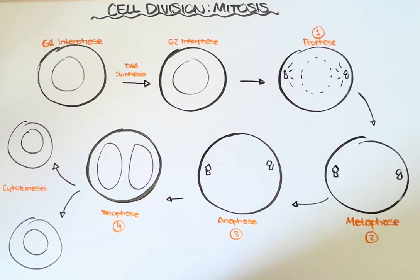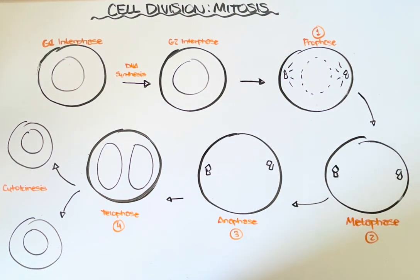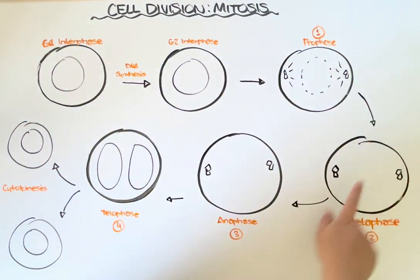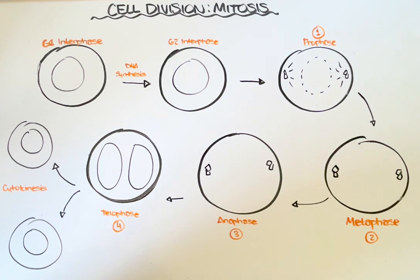Hi everyone and welcome to Shook and Science. In this video, we'll talk about a type of cell division known as mitosis. Mitosis is an essential function for life. Every single organism on our planet does this process because it allows them to take a parent cell and go through a few simple steps and essentially split into two identical daughter cells. This is the process that organisms use to grow, to repair their tissues, and to maintain cells as they die throughout their lifespan.